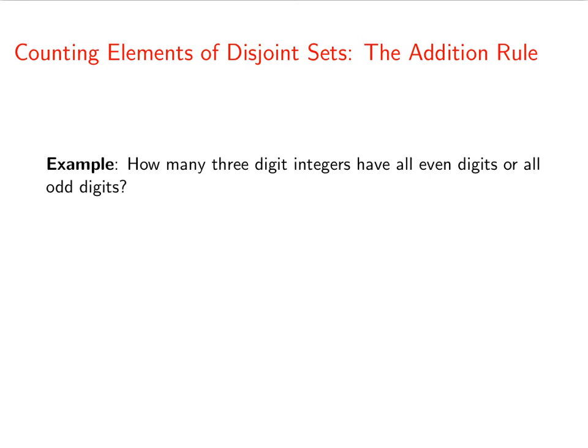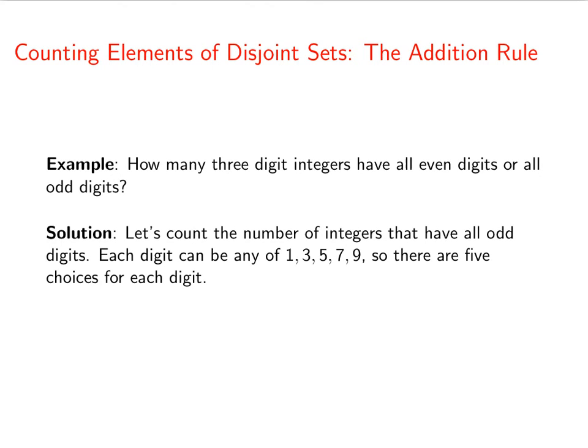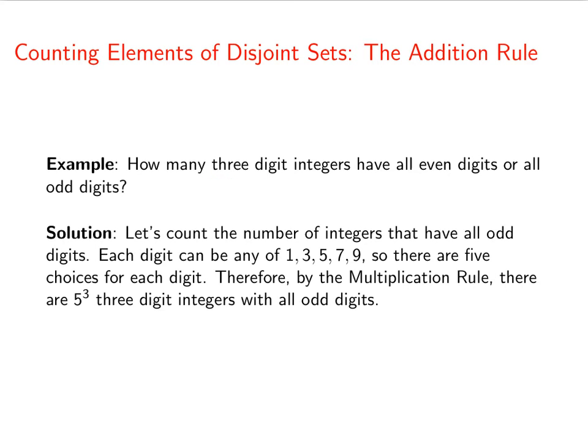How many three-digit integers have either all even digits or all odd digits? First let's count the number of integers that have all odd digits. Each digit can be any of 1, 3, 5, 7, or 9, so we have five choices for each digit. Keep in mind, we're doing three-digit integers here. The multiplication rule tells us there are 5 × 5 × 5 three-digit integers that have all odd digits.